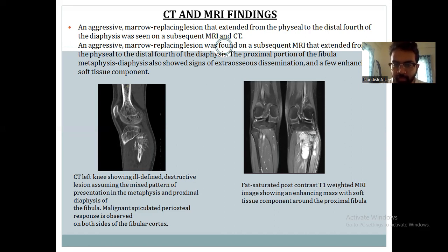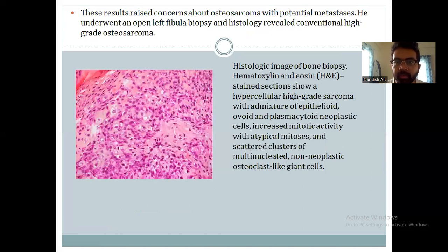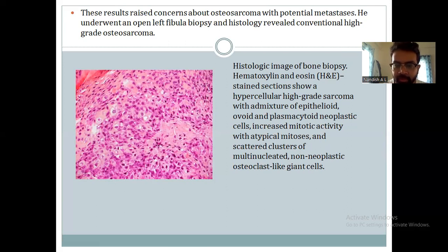Coming to the MRI findings. Pre- and post-contrast MRI imaging shows an enhancing mass with soft tissue components along the proximal fibula. These results raised concern about osteosarcoma with potential metastasis. The patient underwent open left fibula biopsy and the histology revealed conventional high-grade osteosarcoma. The H&E stain shows evidence of high-grade sarcoma with adenoid, epithelioid, ovoid, and plasmacytoid neoplastic cells, increased mitotic activity, and scattered clusters of multinucleated non-neoplastic osteoclast-like giant cells.